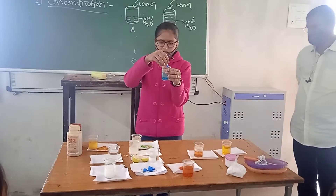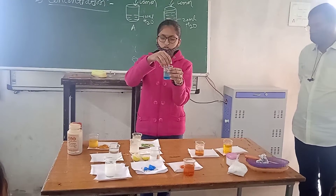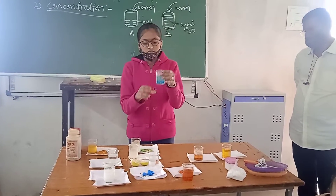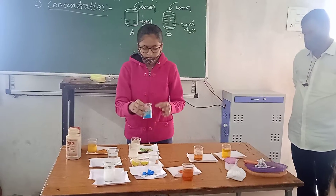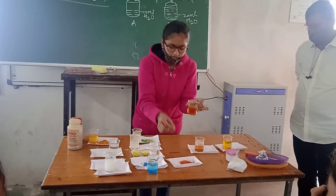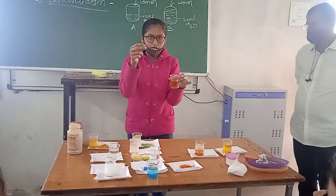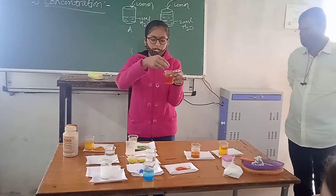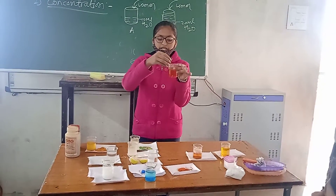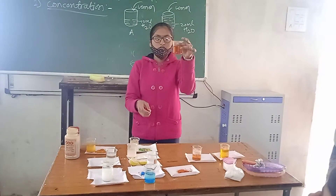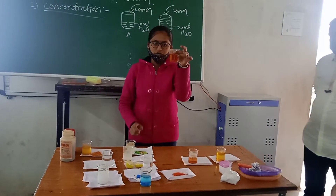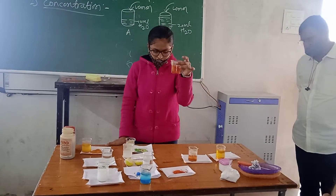Copper sulfate is poured into the solvent and gives a blue color. Here is potassium dichromate — when potassium dichromate is added into a solvent, it gives an orange color.